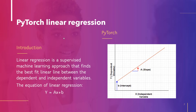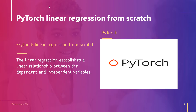Now let's discuss PyTorch linear regression from scratch. Linear regression establishes a linear relationship between the dependent and independent variables. In linear regression, we build a model and predict the relationship between the dependent and independent variables. We will understand this concept with the help of an example.